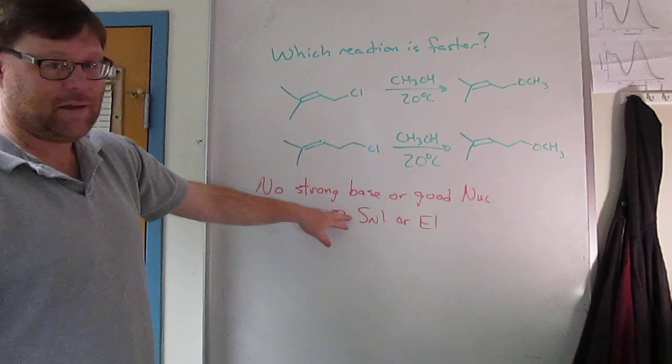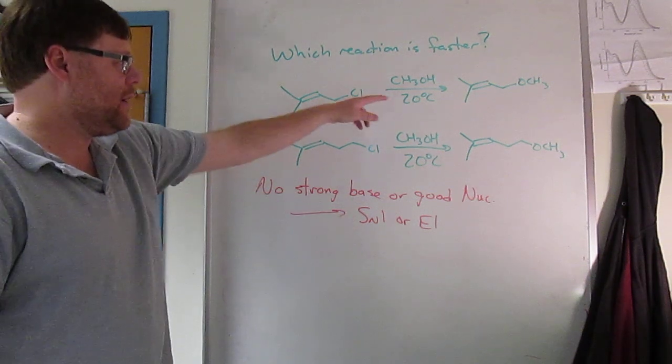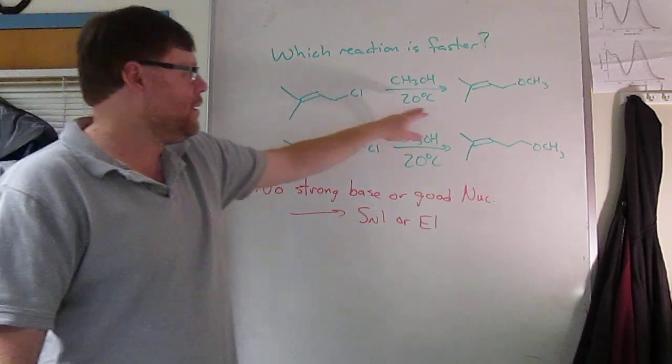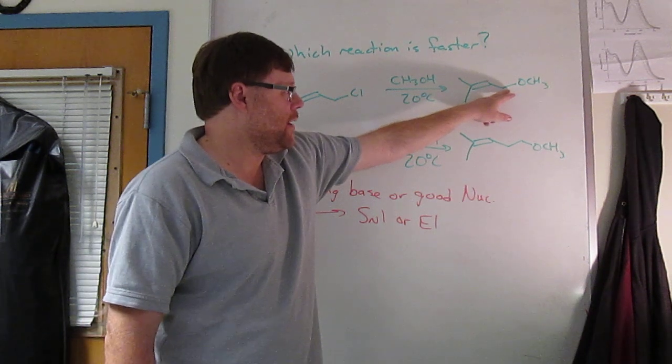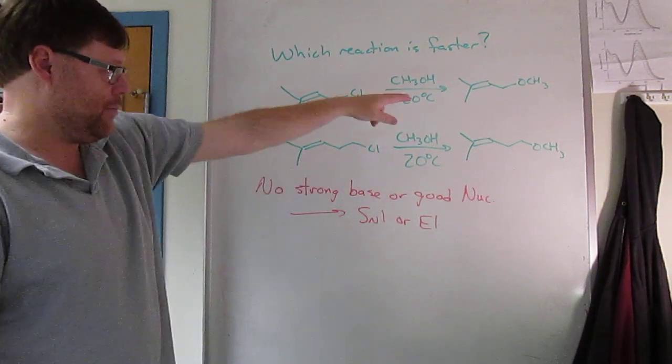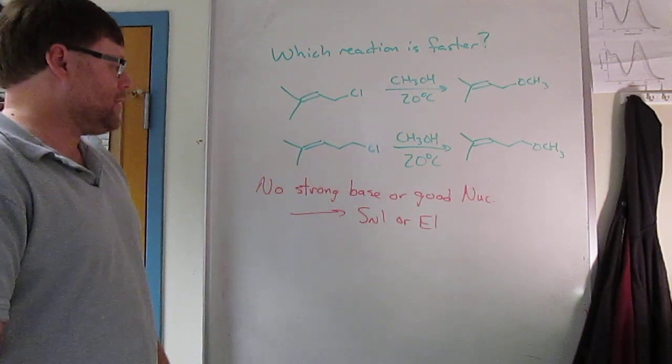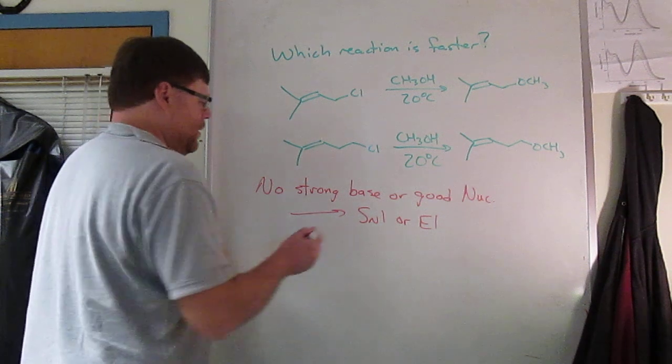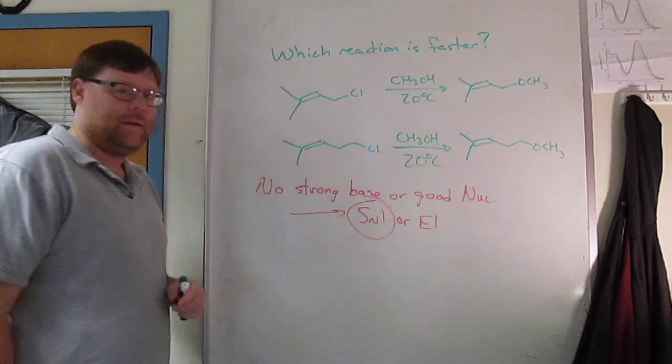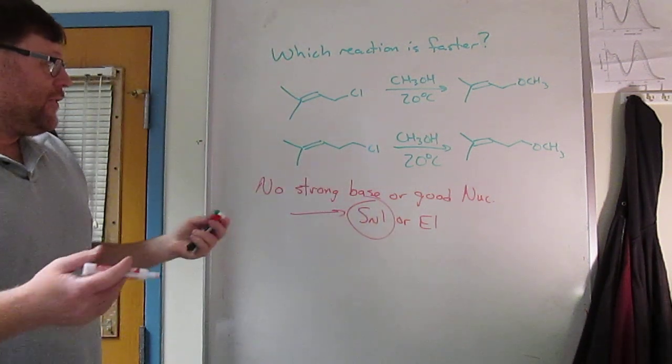Well is it SN1 or E1? And it's clearly a substitution reaction. We lose a chloride and we bring in a methoxide. We don't make a double bond. The double bond in the product is already present in the starting material. So it's an SN1 reaction.